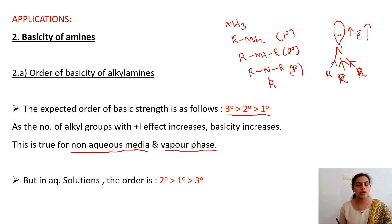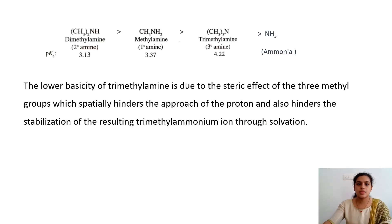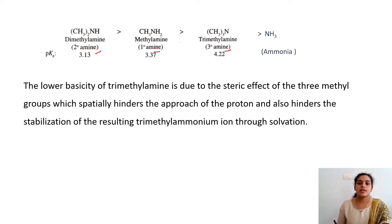But actually, in aqueous solution — where we normally check basicity — the tertiary amine has changed its position from first to last. The actual order in aqueous solution is secondary > primary > tertiary. This unexpected lower basicity of the tertiary amine is due to the steric effect of the three methyl groups present around the nitrogen atom.